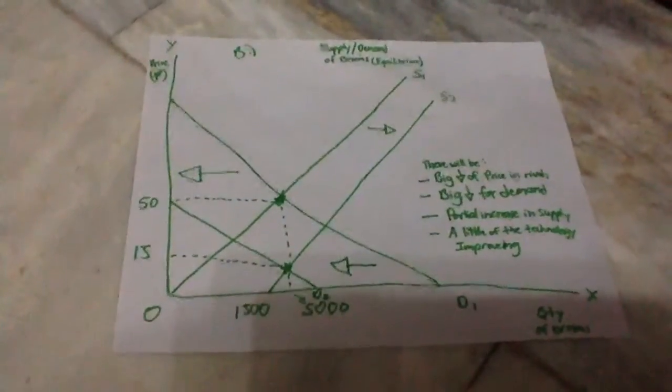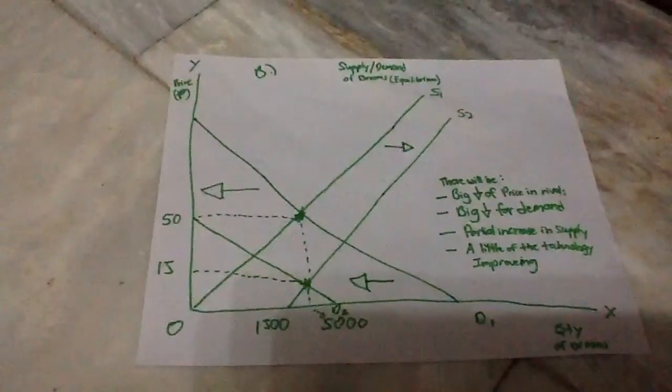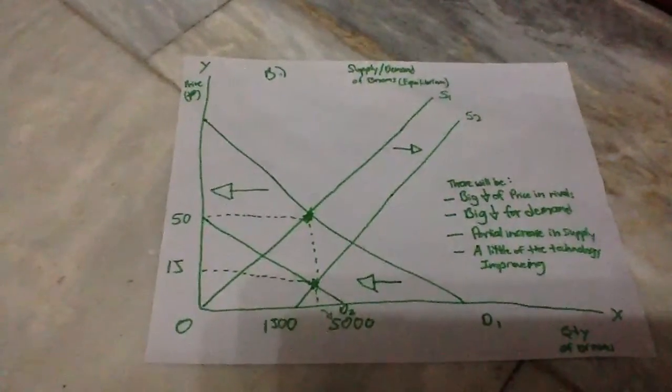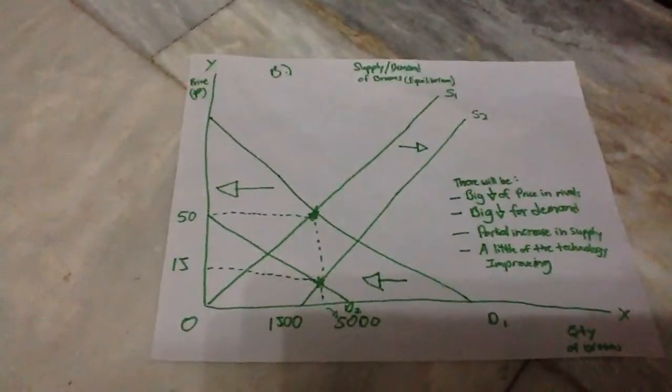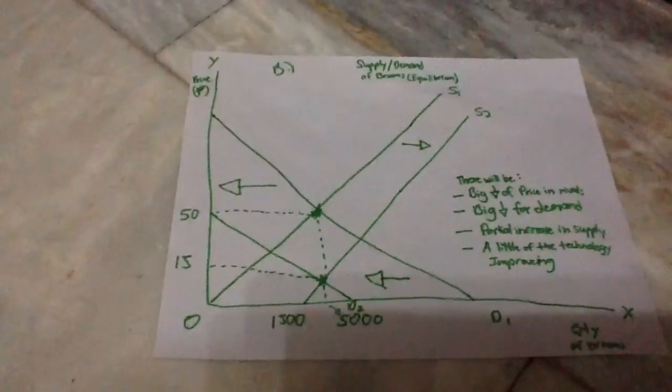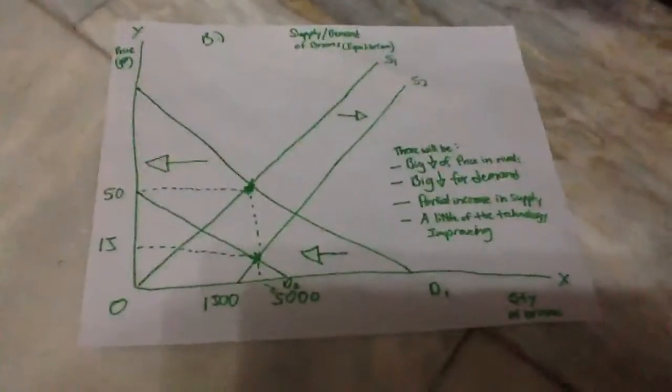The next question is B. Graph the effects of slight improvement in harvesting technology for Tambo, followed by a huge drop in the price of Chinese brooms from 50 pesos to 15 pesos per broomstick.